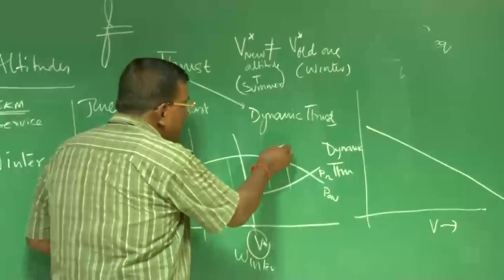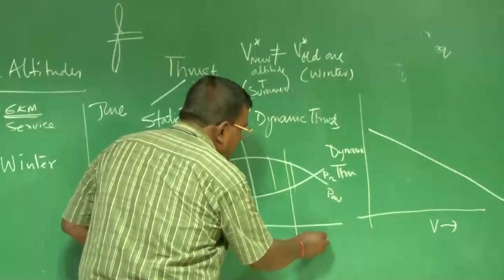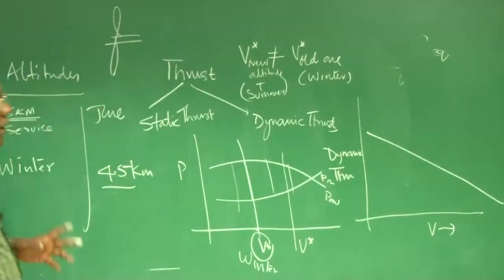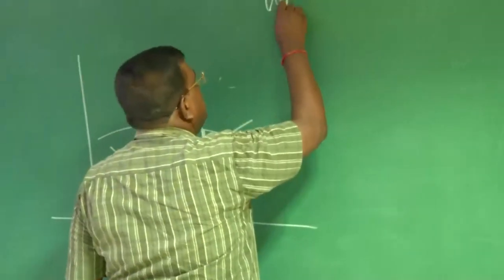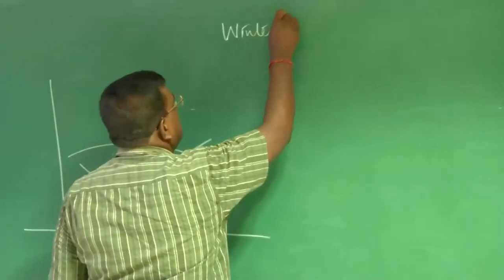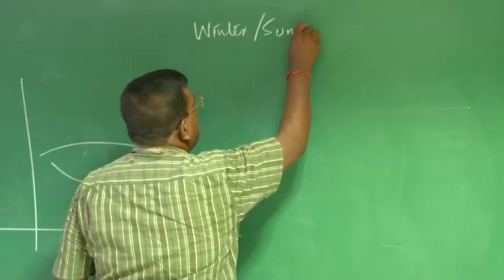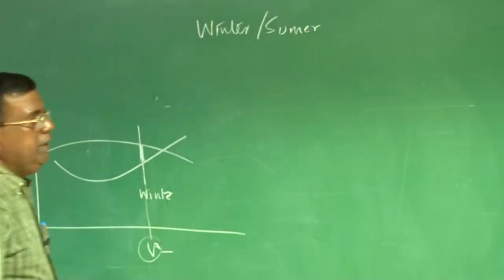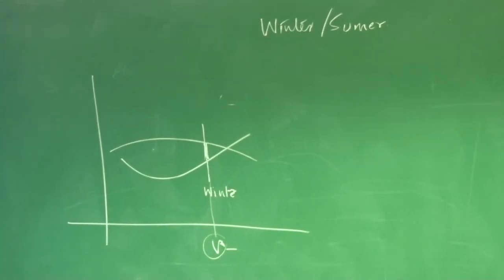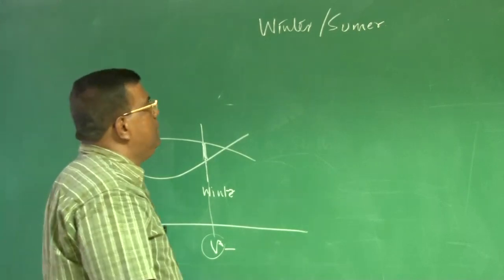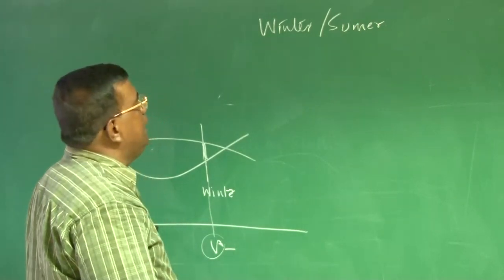So whatever was V star here, you have to fly perhaps somewhere here. But now imagine. But now imagine, let us say, because of your design and constraints, when I am talking about winter and summer, I am talking about the speeds being different to maintain the level flight or maintain any operation which gives similar output.